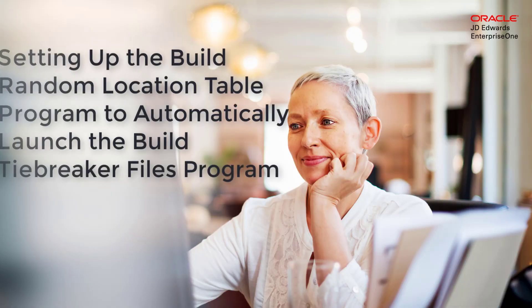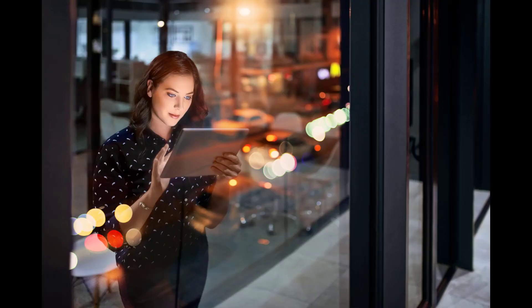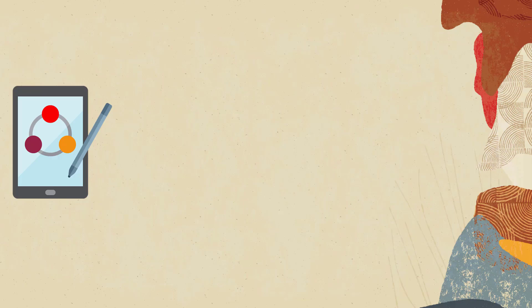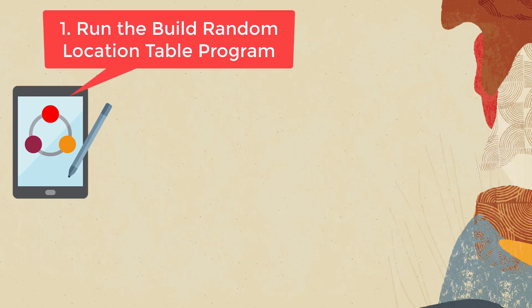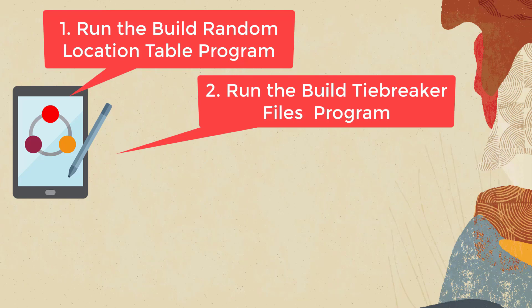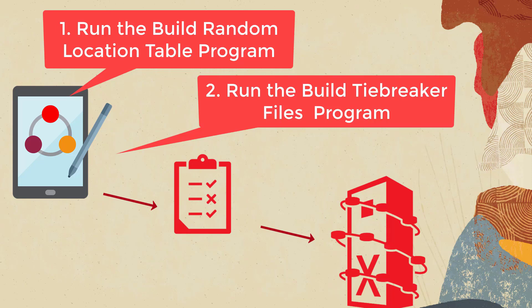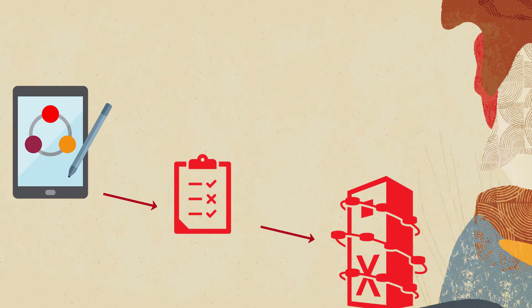This tutorial shows you how to set up the Build Random Location Table program to automatically launch the Build Tiebreaker Files program. Currently, Rozier Warehouse Manager has to undergo a two-step manual process: first, run the Build Random Location Table program and then run the Build Tiebreaker Files program to map or set up random rules in the Warehouse Management System.